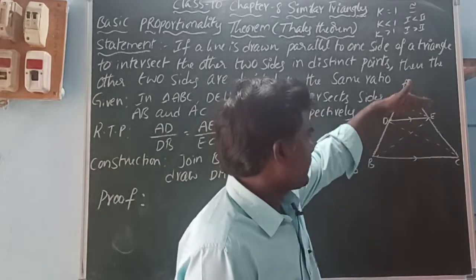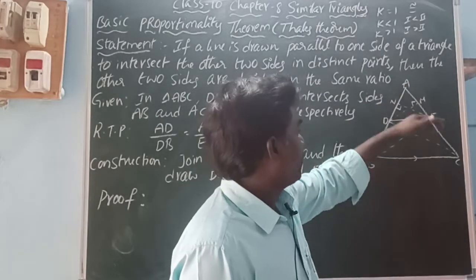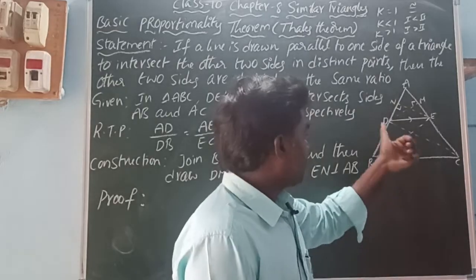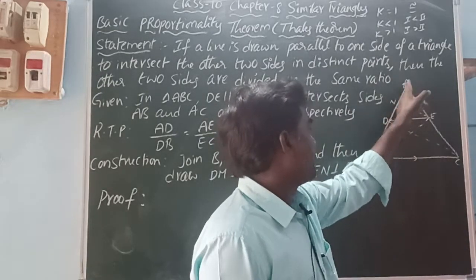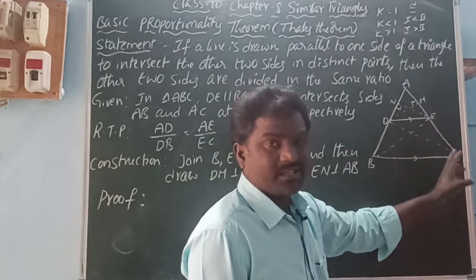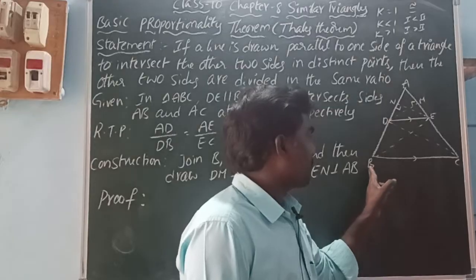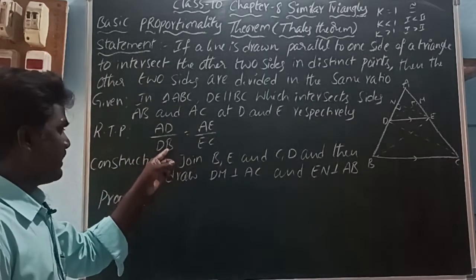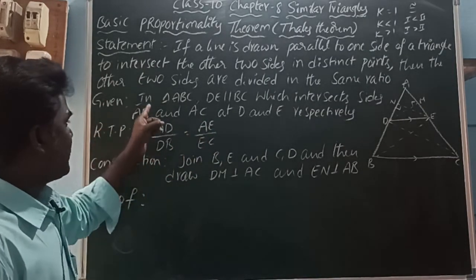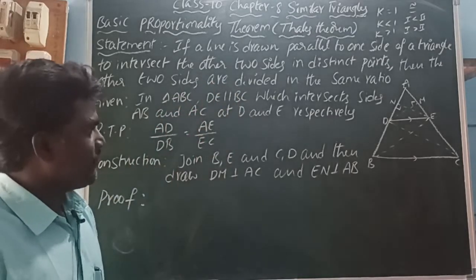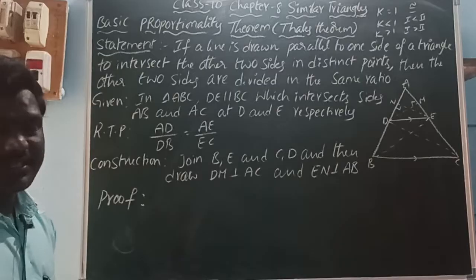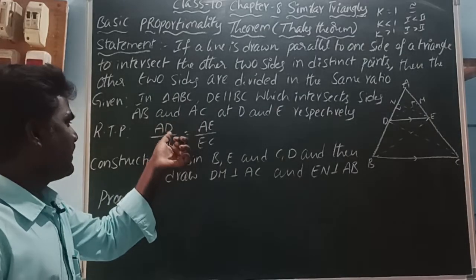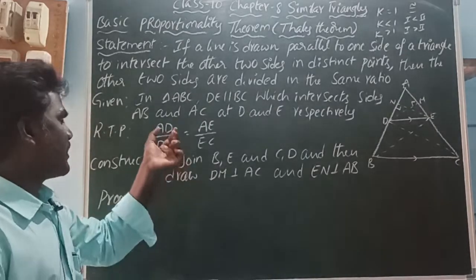Let us take triangle ABC. DE is parallel to BC. DE intersects AB at point D and AC at point E. Then the sides' ratios are equal: AD is to DB is equal to AE is to EC. Ratio is nothing but division, that is AD by DB is equal to AE by EC. Given: triangle ABC, DE is parallel to BC, which intersects sides AB and AC at points D and E respectively. Required to prove: AD by DB is equal to AE by EC.